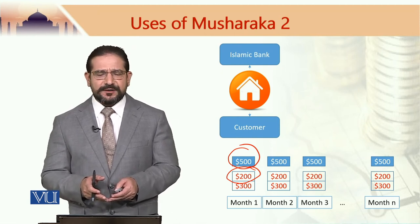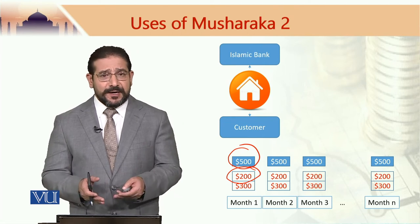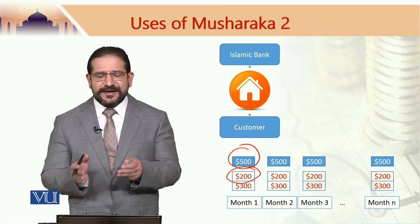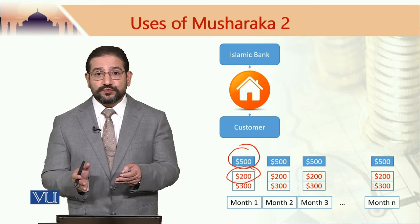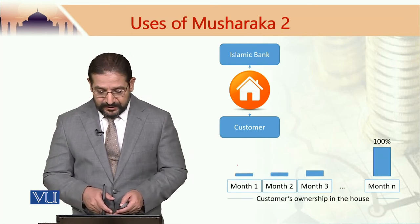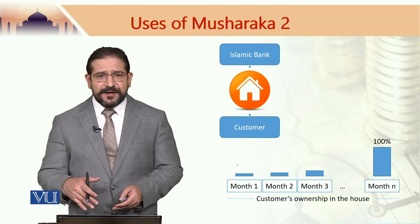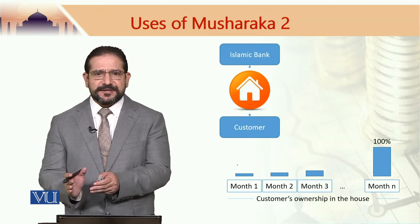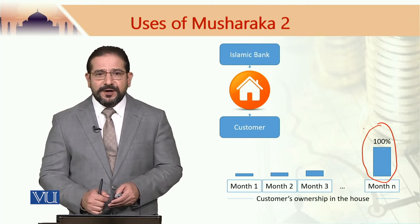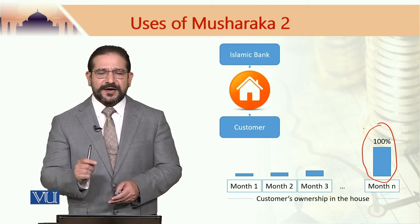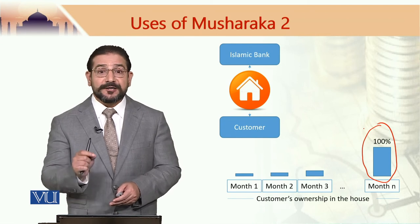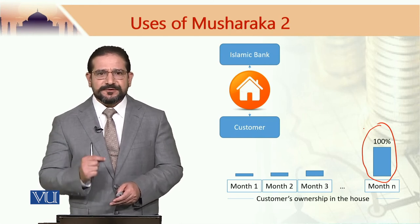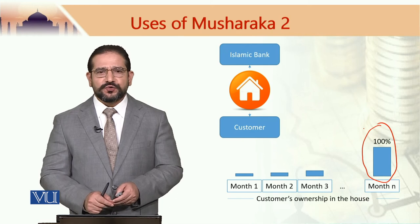In the case of the United Kingdom, where mortgages are very frequent and Islamic mortgages are also being offered by some institutions, the financing period is up to 25 years. Once all the monthly payments have been paid by the customer and the financing period ends, the customer becomes full owner of the property — owning the house 100 percent — and the bank transfers ownership of the property to the customer.